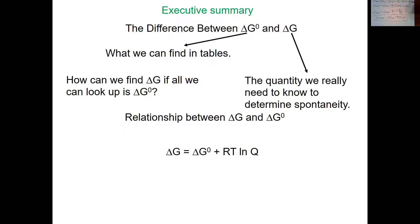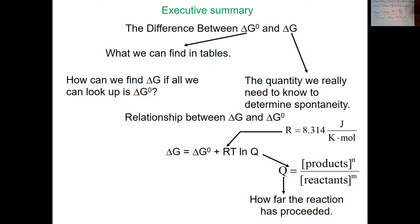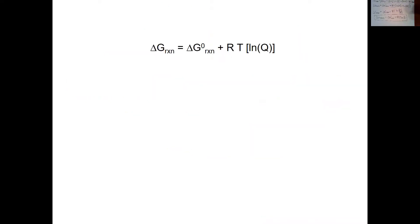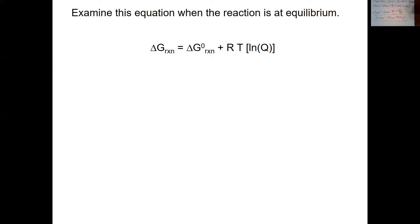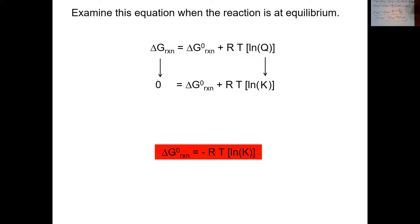This equation has another added benefit. At equilibrium, it's delta G non-standard that equals zero — not delta G standard. At equilibrium we use K instead of Q, and delta G non-standard equals zero. Rearranging to solve for delta G standard, we get delta G standard equals negative RT ln of K. That is a super important equation we will see throughout the remainder of this thermodynamics unit.